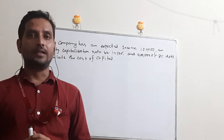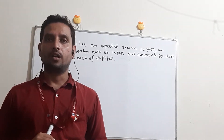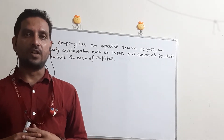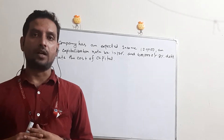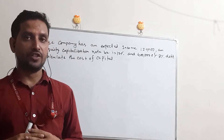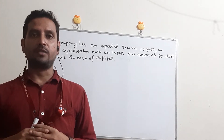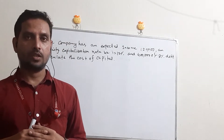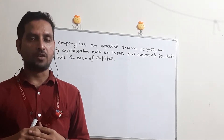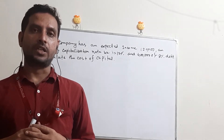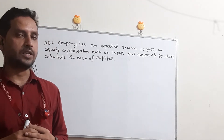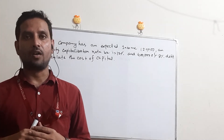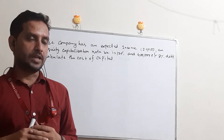We already learned the assumptions of the NI approach and its criticisms. We found that there are two components in the NI approach: one is common stock and another is debt or debenture. The key assumptions are that cost of equity is always greater than cost of debt, and both cost of equity and cost of debt are constant. Also, NOI — that is net operating income or EBIT — is constant, and risk is always present in every business.